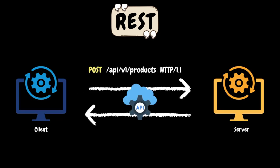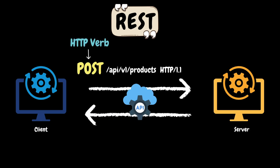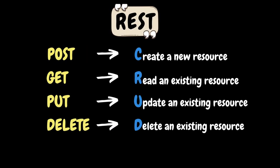A client interacts with a resource by making a request to the endpoint over HTTP. The request has a specific format like: POST /api/v1/products HTTP/1.1. The URI is preceded by an HTTP verb — in this case POST — which tells the server what we want to do with the resource. We also have other HTTP verbs like GET, PUT, and DELETE. POST is used to create a new resource, GET is used to read an existing resource, PUT is used to update an existing resource, and DELETE is used to delete an existing resource.